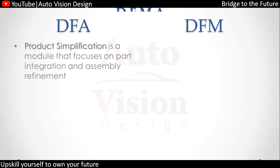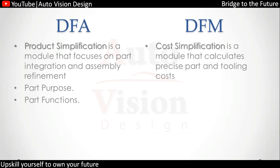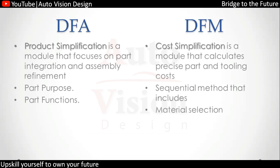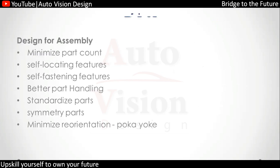For Design for Assembly, product simplification is required in terms of assembly — we need to make sure the assembly is properly redefined. We can reduce part count, check function, and make sure the part will be assembled properly to reduce cost. For Design for Manufacturing, it is cost simplification with respect to manufacturability — reducing tooling cost through material selection and manufacturing process elimination in the design itself.